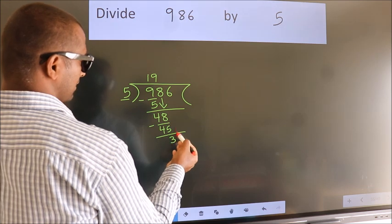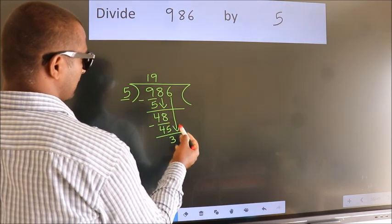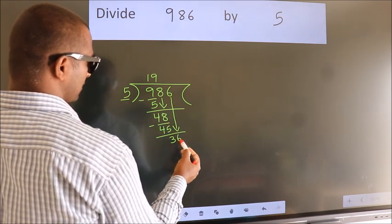After this, bring down the beside number. So, 6 down, making 36.